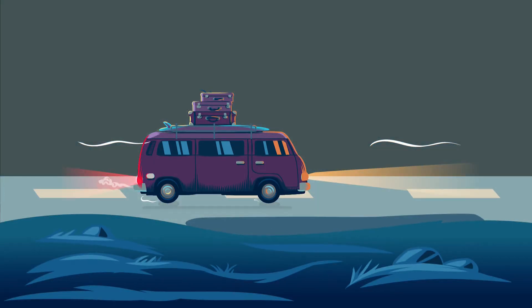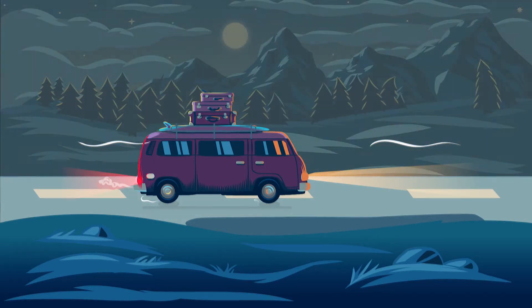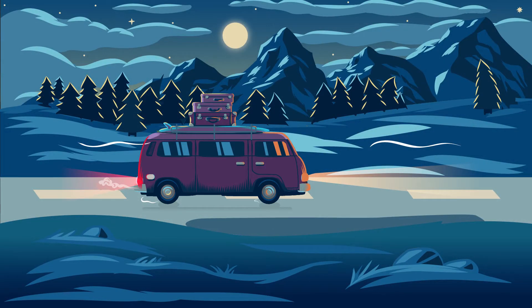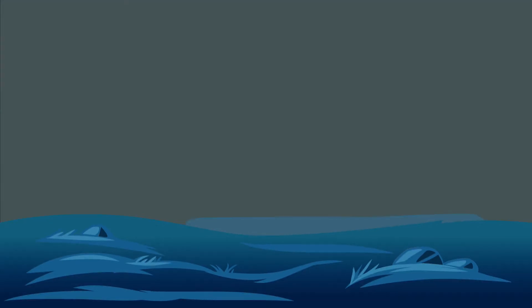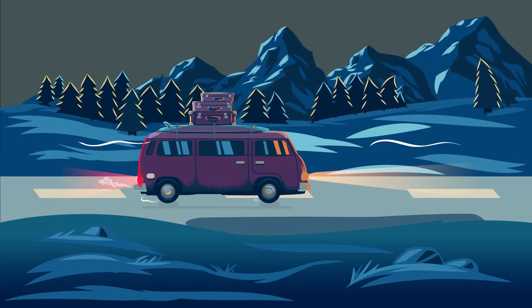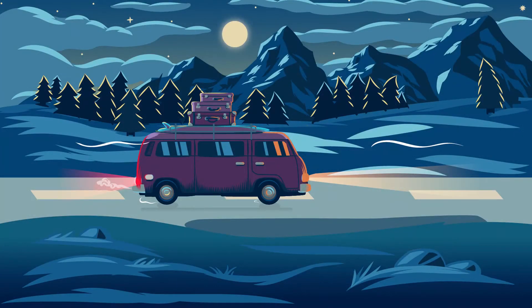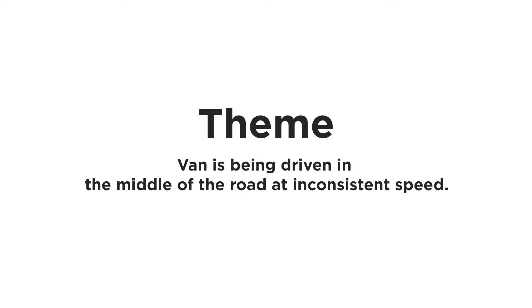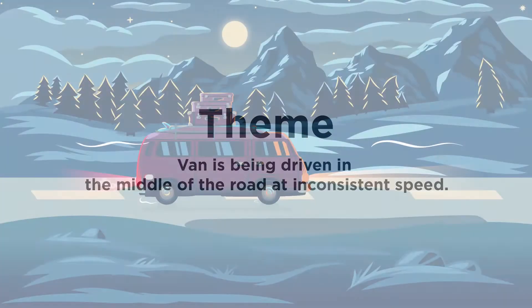After that, the main thing in this environment is the foreground. To achieve this particular animation, let's go through the concept so you can understand it better. The scene has depth — to observe this image, our eyesight travels from near to far, so we need to consider the camera movement. Looking at footage from a running car, near objects move faster than far ones. The same concept applies here: the van is being driven in the middle of the road at inconsistent speed.